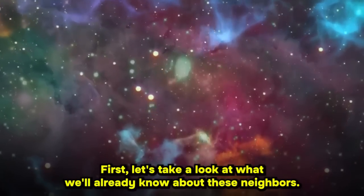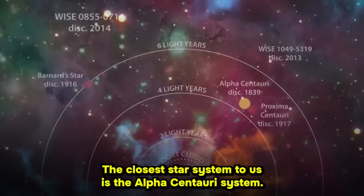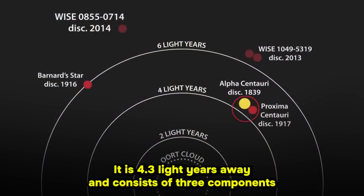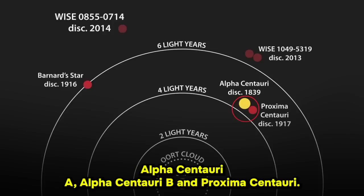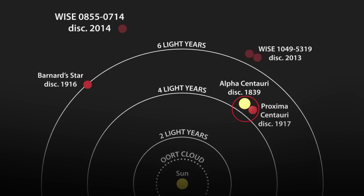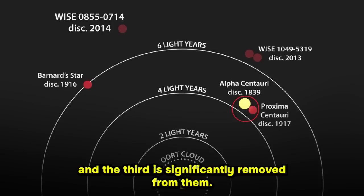The closest star system to us is the Alpha Centauri system. It is 4.3 light-years away and consists of three components: Alpha Centauri A, Alpha Centauri B, and Proxima Centauri. The first two stars seem to be a single light source from afar, and the third is significantly removed from them.